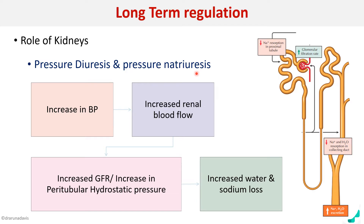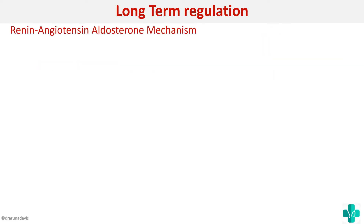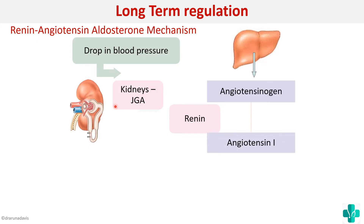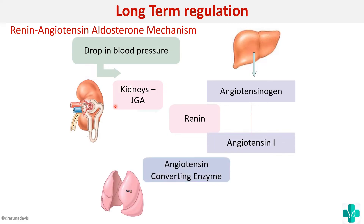The second mechanism of long-term regulation is the renin-angiotensin-aldosterone mechanism. When there is a drop in blood pressure, it is detected by the juxtaglomerular apparatus in the kidneys, which produces a hormone called renin. Renin converts angiotensinogen — produced by the liver — to angiotensin 1, and the angiotensin-converting enzyme produced by the lungs converts angiotensin 1 to angiotensin 2. Angiotensin 2 is the main key player in this mechanism.